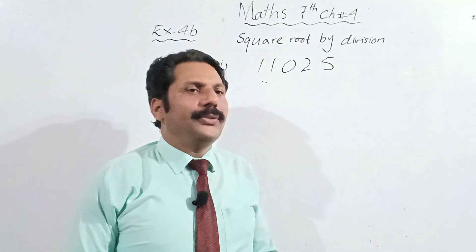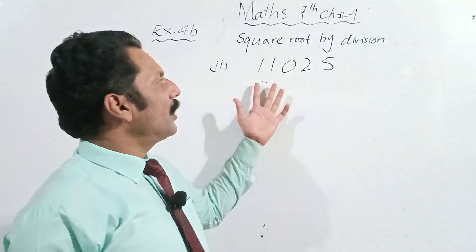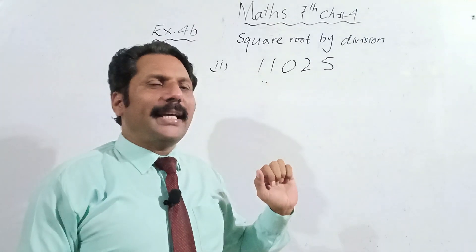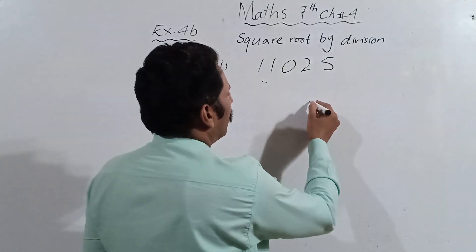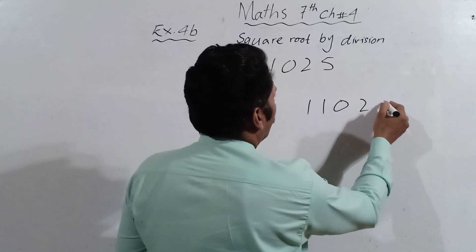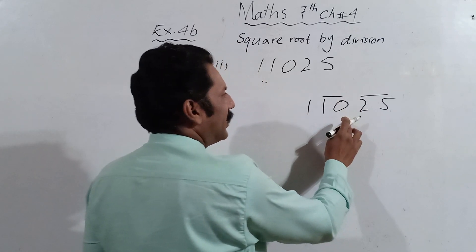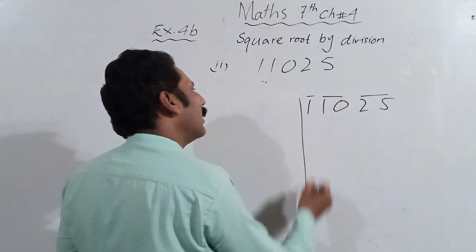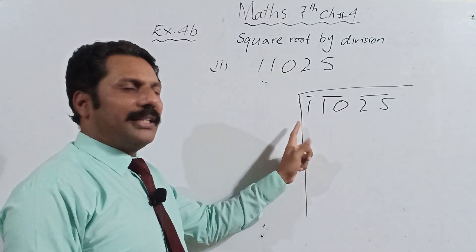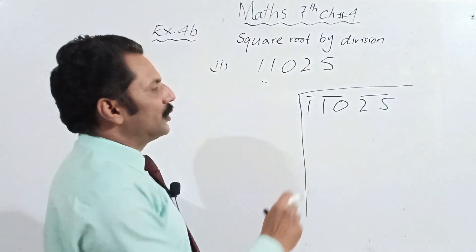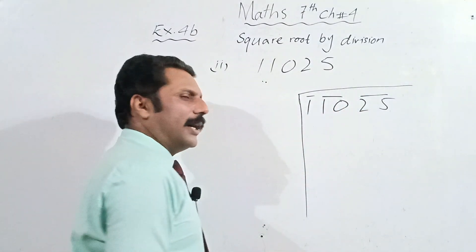Now let's do the second part. The number is 111025 and we have to find the square root by division. In the first part there were 4 digits and we made 2 pairs. Here the number of digits is 5. We make pairs from the right side, not the left side — otherwise the answer will be wrong. Starting from the right: the first pair is 25, the second pair is 10, and the third group is 1.